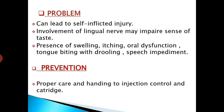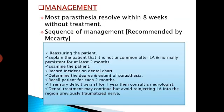Problems faced during paresthesia: it can lead to self-inflicted injury. Involvement of the lingual nerve may impair the sense of taste. Presence of swelling, itching, oral dysfunction, tongue biting with drooling, or speech impediment may present. Prevention involves proper care and handling of injection control and cartridge. Management: most paresthesia resolve within 8 weeks without treatment. The management sequence recommended by McAid includes reassuring the patient, explaining it is not uncommon after local anesthesia and normally persists for at least 2 months, examining the patient, recording the incident on the dental chart, determining the degree and extent of paresthesia, and recalling the patient every 2 months. If sensory deficit persists for 1 year, consult a neurologist. Dental treatment may continue but avoid re-injecting local anesthesia into the previously traumatized nerve region.